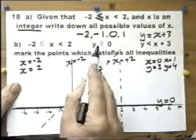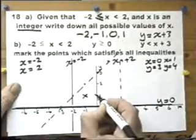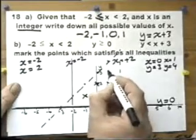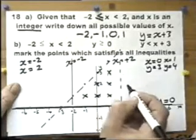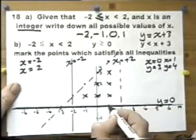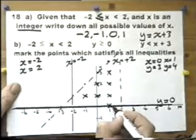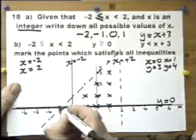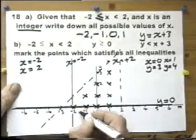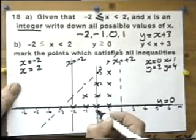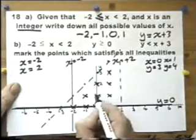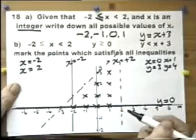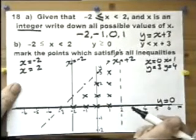That means that point does all three of those things. So does that point, that point, that point — and that point is allowed to be on this solid line. Not that point though. 1, 2, 3, 4, 5, 6, 7, 8, 9, 10 — those are the ten crosses that the question is talking about.